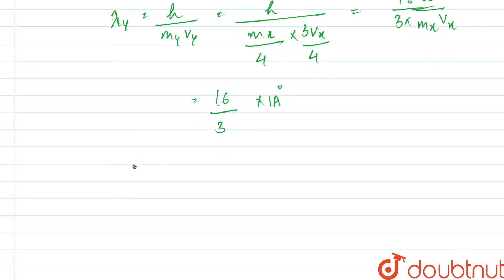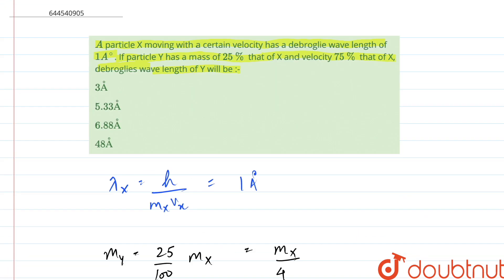Therefore, the de Broglie wavelength of Y comes out to be 5.33 angstroms, which is our answer and option B.